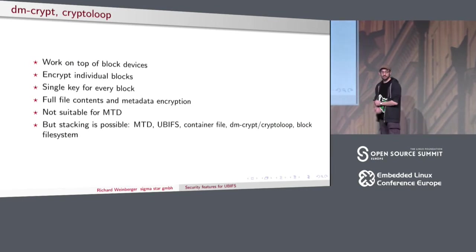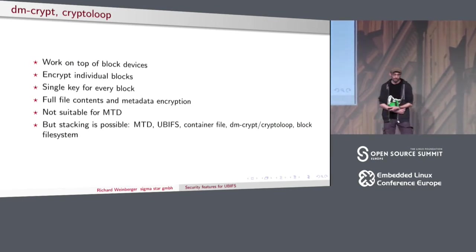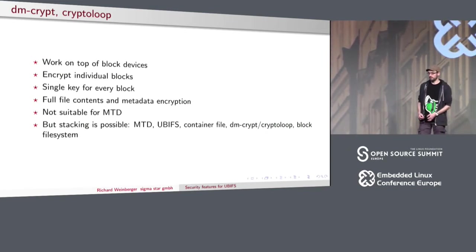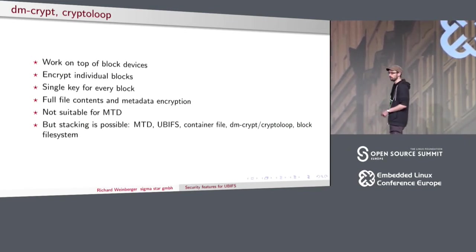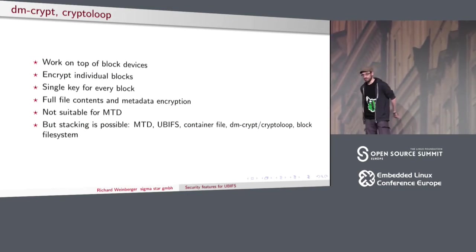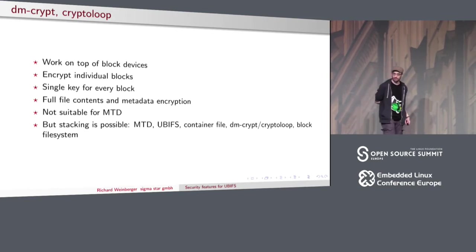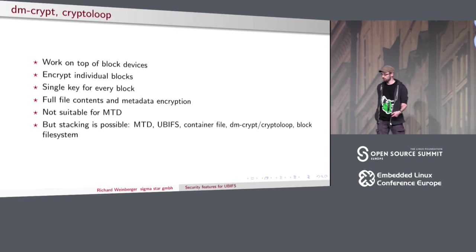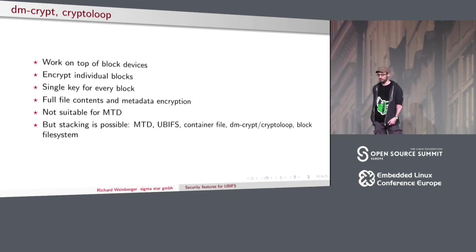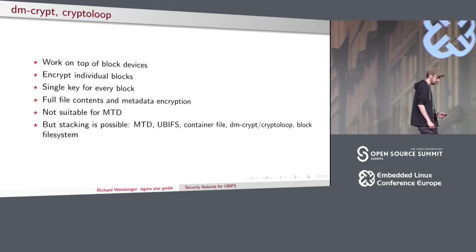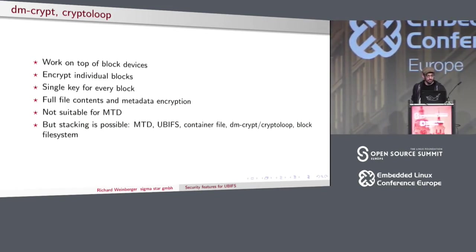The good thing about DMCrypt is that since it works on the block layer — the layer below the file system — every single bit of the file system is encrypted. Of course, if you really want to, you can also use this on MTD by stacking a container file on UBIFS, loop-mounting it using DMCrypt, and mounting a block file system like ext2 on top of it. It kind of works, but I would not recommend it.